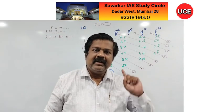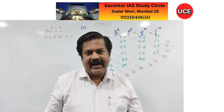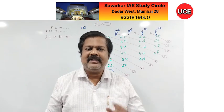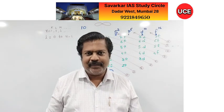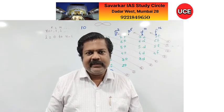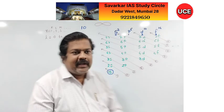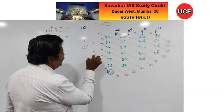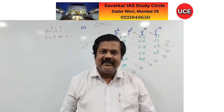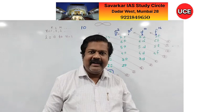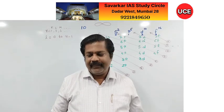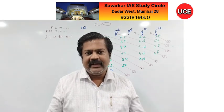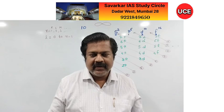The P orbital shape resembles the infinity sign or the figure 8 when vertical, but in textbooks it is called dumbbell shape. So we say dumbbell shape.